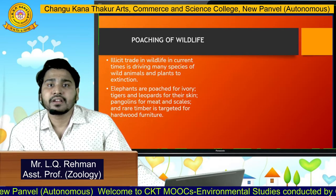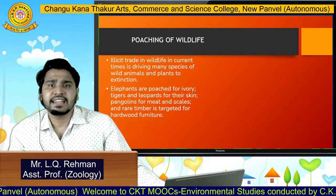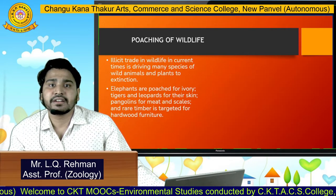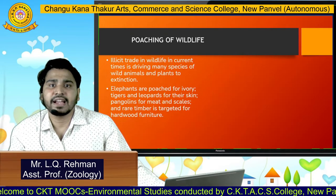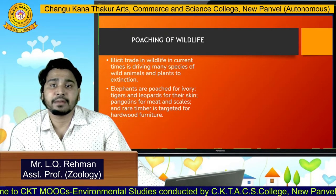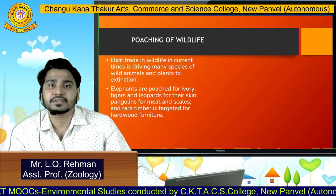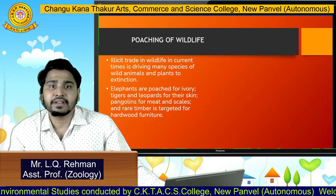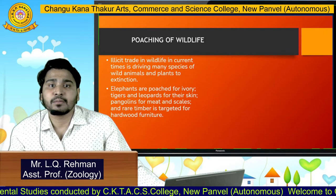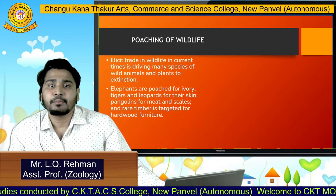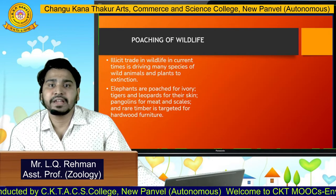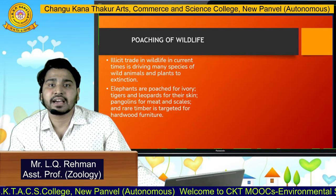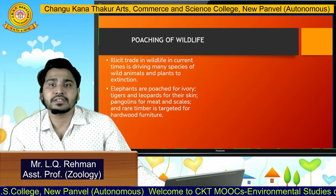Poaching of wildlife is an illicit trade in wildlife in current times. It is driving many species of wild animals and plants to extinction. Animals are poached for ivory; tigers and leopards are poached for their skin; pangolins are poached for their meat and scales; and rare timber is targeted for hardwood furniture.